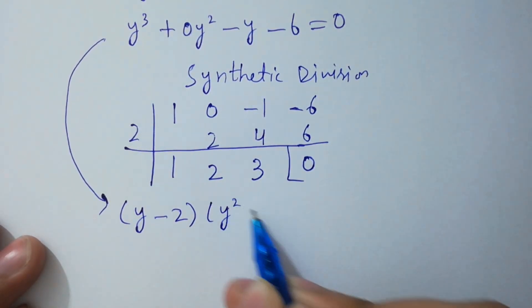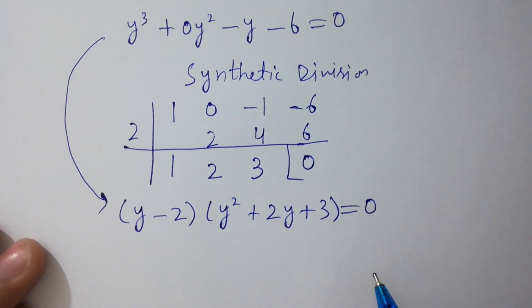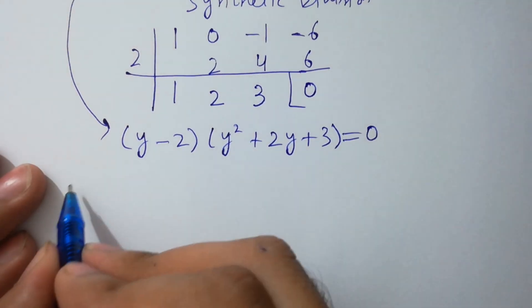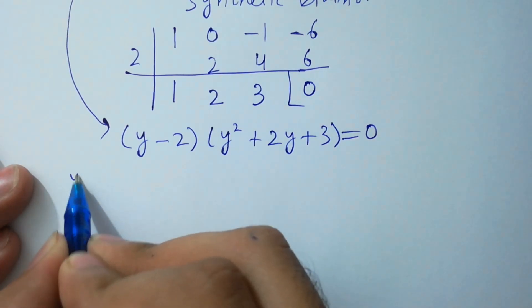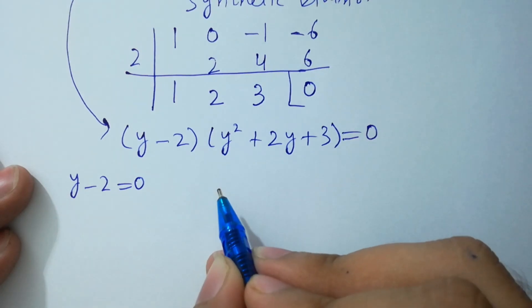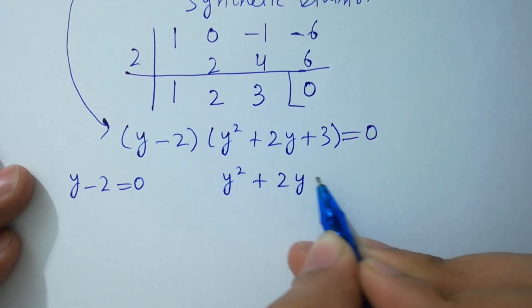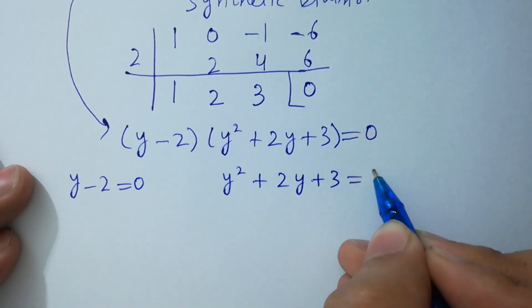I hope you understood, either y minus 2 equal to 0 or y square plus 2y plus 3 equal to 0.